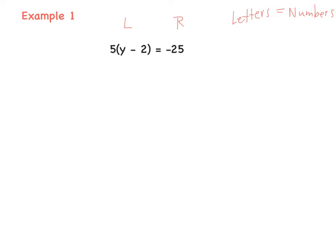Remember, if we have a number beside the bracket, we need to multiply this number by every single term in the bracket. So we need to multiply 5 by y and 5 by minus 2. You can draw the arrows so we won't lose anything. So 5 by y is 5y, and 5 by minus 2 is minus 10, equals minus 25. The first step is done.